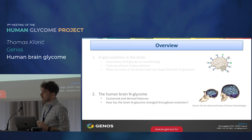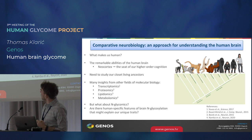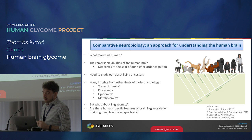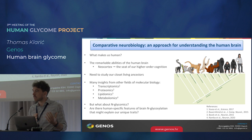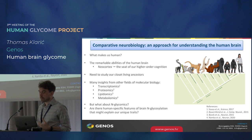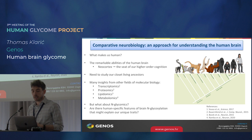This brings us to why we have a special interest in the human brain N-glycome. Comparative neurobiology is an approach to help us understand the human brain and what makes it special — it's an age-old question. Studying the human brain side by side with our closest ancestors has brought many interesting insights from other fields of molecular biology. But what about N-glycomics? Are there maybe some human-specific features of brain N-glycosylation that might explain our unique traits?